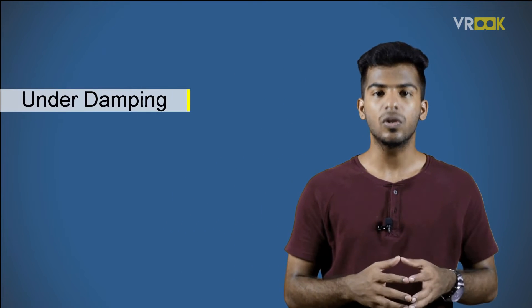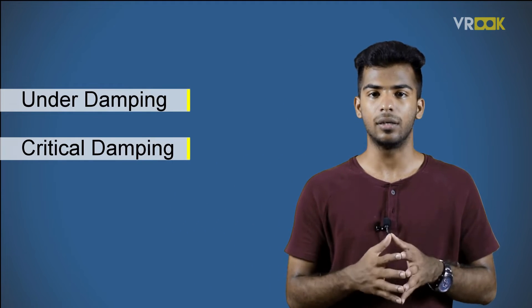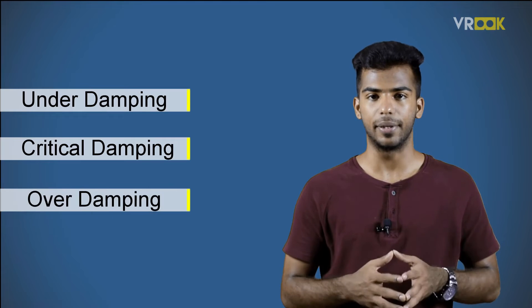How fast the pendulum can reach equilibrium position pushes us to know the types of damping. There are three types: underdamping, critical damping, and overdamping.